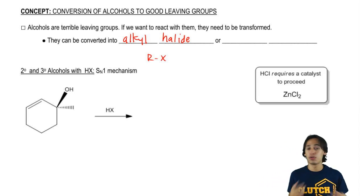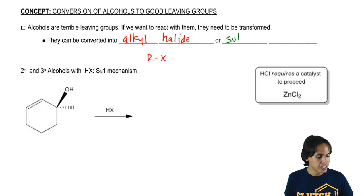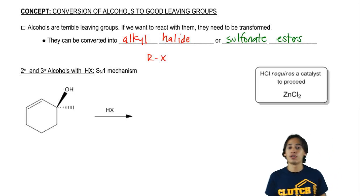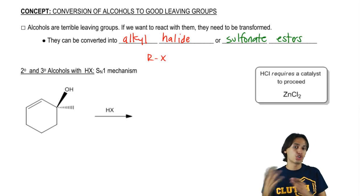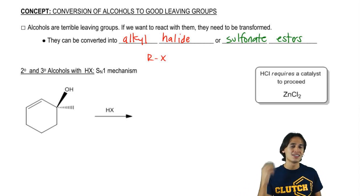But another option that we also have that we'll discuss in a little bit is sulfonate esters. Now you might have learned already that sulfonate esters make great leaving groups. I actually have talked about that before, but now what we're going to learn is how to actually turn an alcohol into a sulfonate ester so that it can become a great leaving group. Let's start off with this page. I just want to do the alkyl halides and later on we'll talk about sulfonate esters.